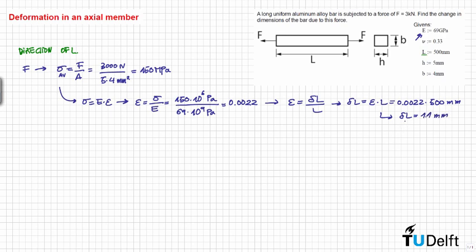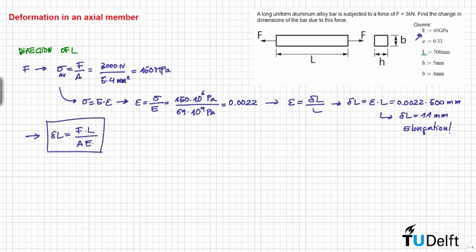From here we have that delta L is equal to 1.1 mm. This is positive, so we have elongation. Remember that instead of following this procedure, for an axially loaded member the increment of L is equal to F times L divided by AE, which is exactly the same formula we have used before.